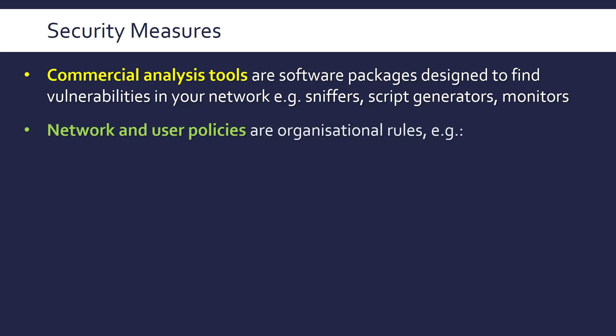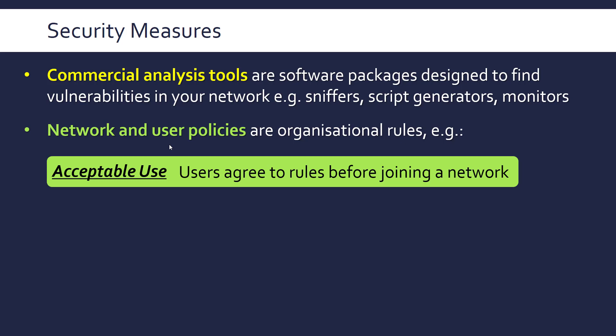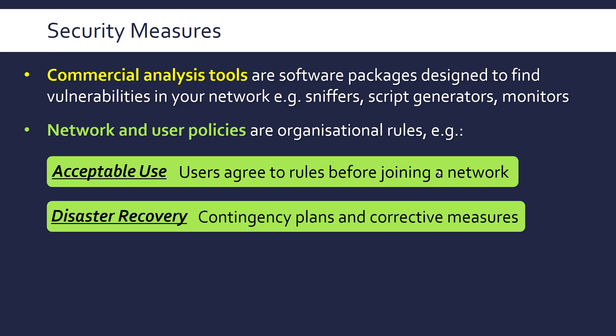A measure examiners love is policies — organizational rules an administrator sets for both the network and users. The acceptable use policy is like terms and conditions you sign when joining a network, agreeing to rules before being allowed to use it — such as when joining a school network, hotel Wi-Fi, or airport Wi-Fi. A disaster recovery policy is a contingency plan for when something goes wrong, with corrective measures to contain or prevent spread — for example, if a computer is infected by malware, disconnecting it from the network and isolating the incident.